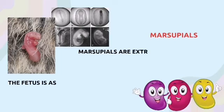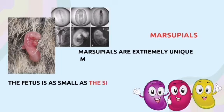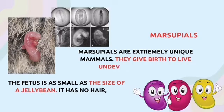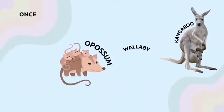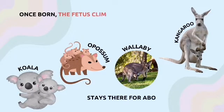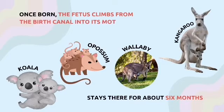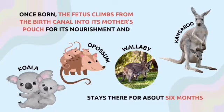Marsupials are extremely unique mammals. They give birth to live undeveloped fetus. The fetus is as small as the size of a jelly bean. It has no hair, no ears, and is blind. Once born, the fetus climbs from the birth canal into its mother's pouch for its nourishment and protection. It stays there for about 6 months, which is long enough for it to survive outside the pouch on its own.